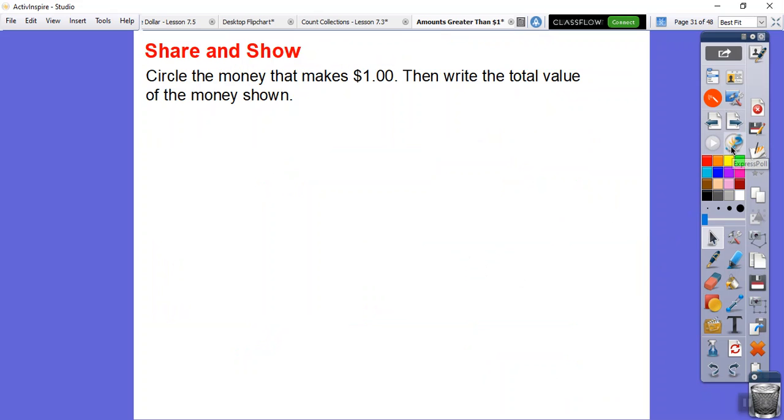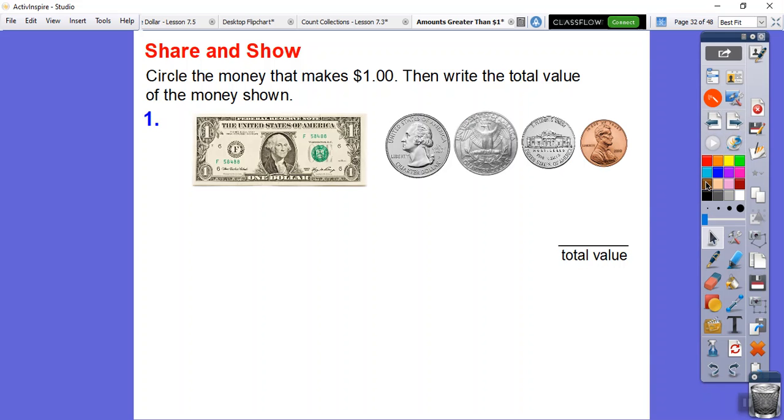So now we're going to circle the money. We're going to have more than that. Circle the money that makes a dollar and then write the total amount of that money right there. So we're going to circle this dollar right here. And then here's 25 cents. Here's another quarter. So that's 50 cents. Here's 55 cents. Here's 56 cents. So if we add those together, we get $1.56.